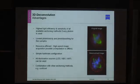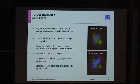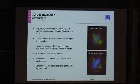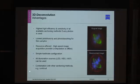One advantage of deconvolution over all optical sectioning techniques is that it offers the highest light efficiency and is the most sensitive technique, because every photon collected is actually used — you don't throw away any photons by blocking them. This provides the lowest phototoxicity and photobleaching of the sample. It is resource-efficient because you do high-speed image acquisition and perform the computation offline on a workstation, so you don't have to sit in front of the microscope. You can combine it with other sectioning methods like confocal microscopes.